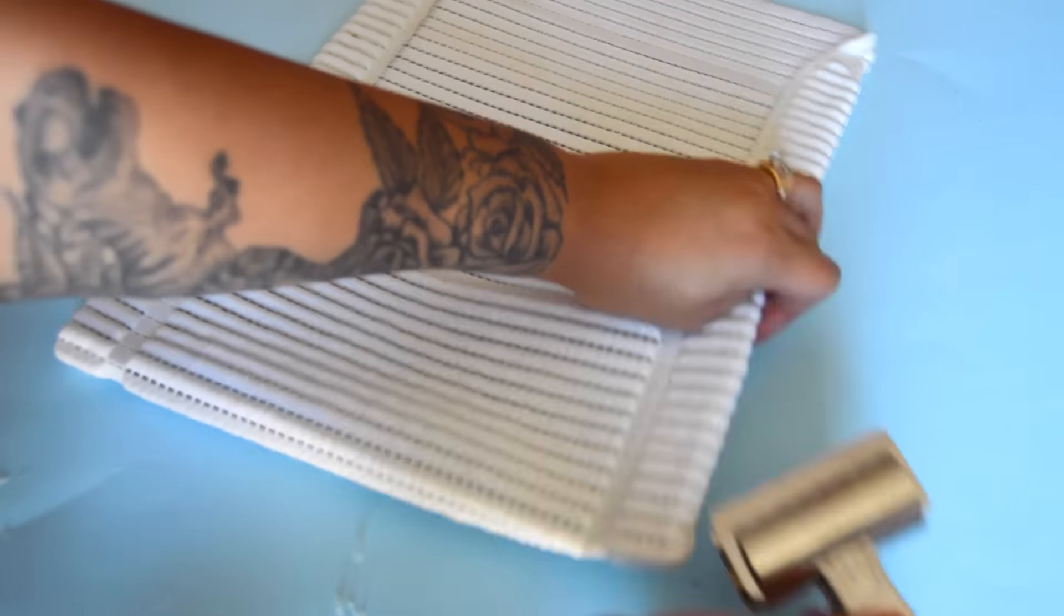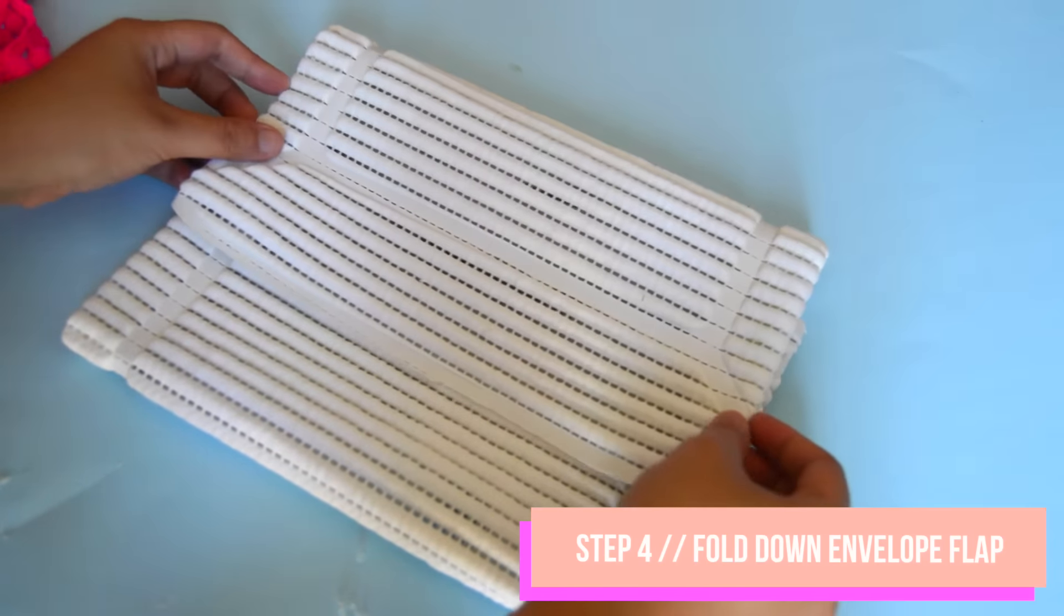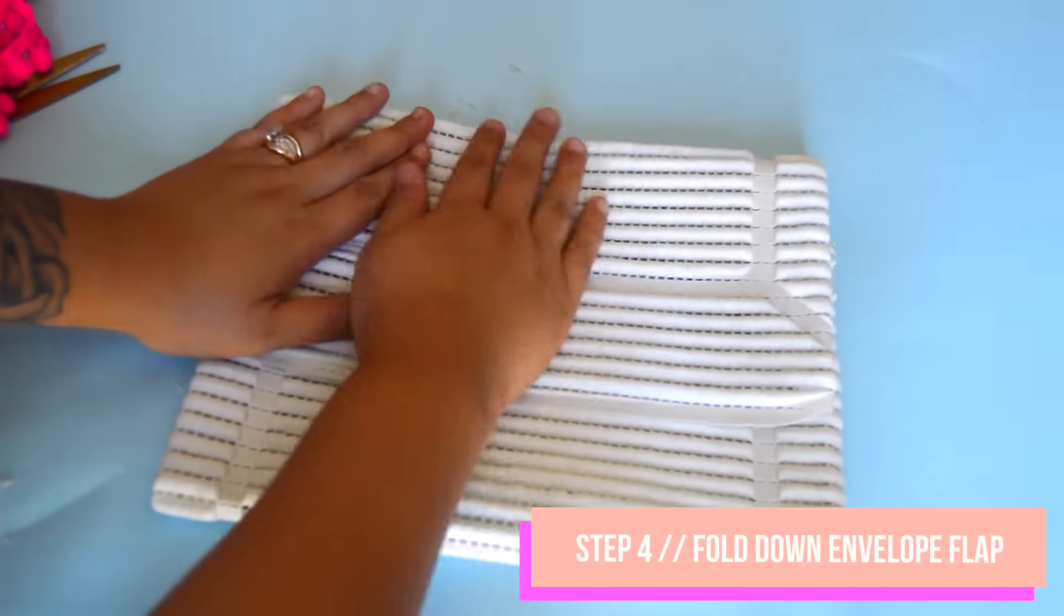After that has dried, fold and crease the top portion of your clutch and this part will be the envelope flap of your clutch. At this point feel free to add any closure that you want like a snap button but I wanted to keep mine without a closure.